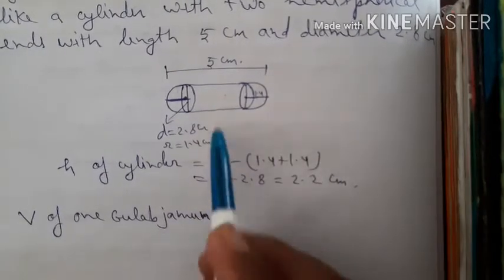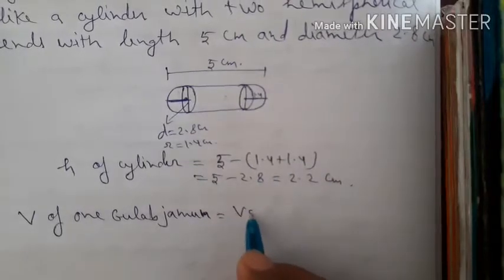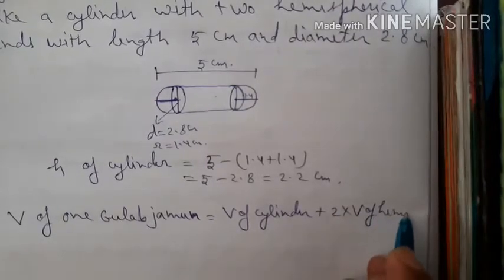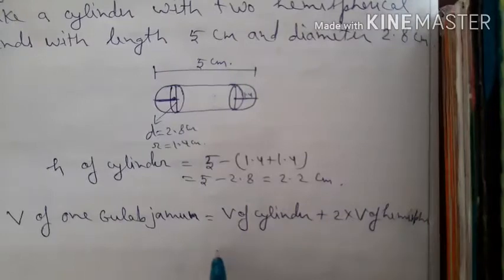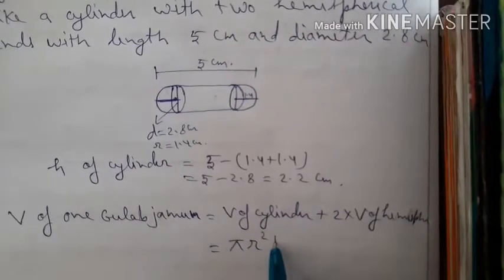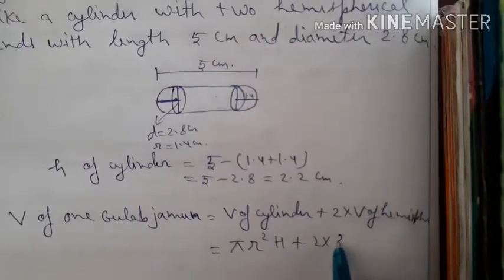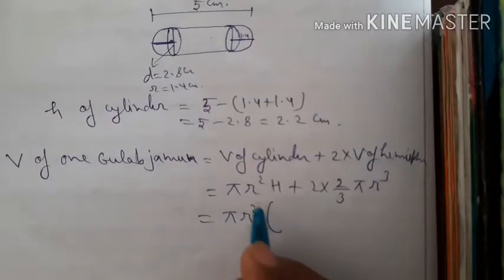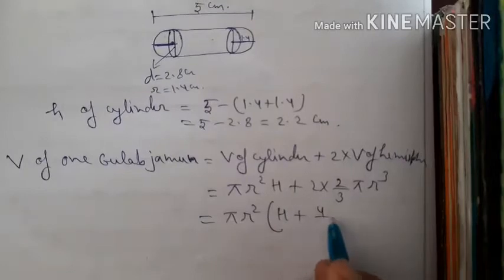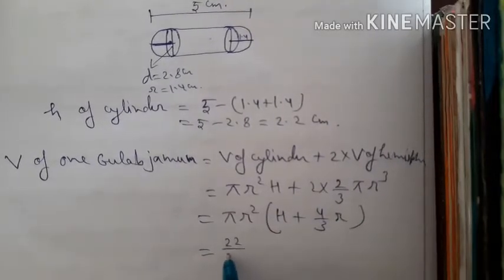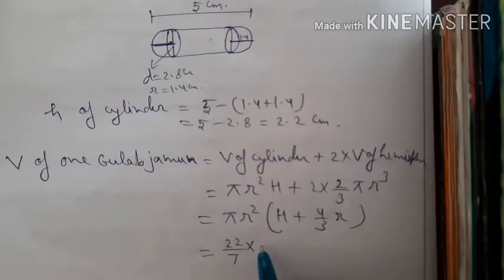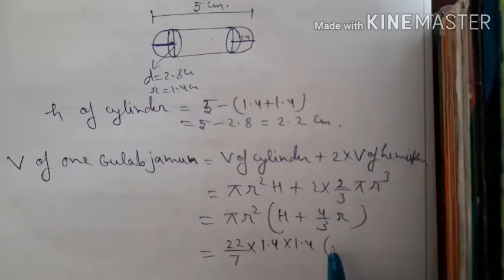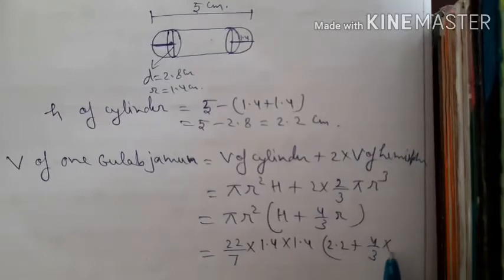Volume of 1 gulab jamun equals volume of cylinder plus 2 times volume of hemisphere: πr²h + 2 × (2/3)πr³. Taking πr² common gives πr²(h + (4/3)r). Putting values: (22/7) × 1.4 × 1.4 × (2.2 + (4/3) × 1.4).